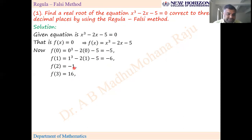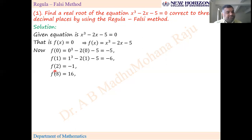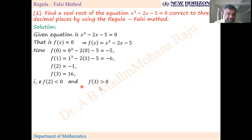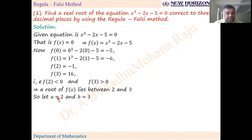At x = 2 the function value is negative, and at x = 3 the function value is positive. Since the polynomial is a continuous function, when you draw the graph from 2 to 3 it will touch the x-axis in between 2 and 3 — meaning f(x) = 0 lies between 2 and 3. So f(2) < 0 and f(3) > 0, meaning a root of f(x) lies between 2 and 3. So we take a = 2 and b = 3.